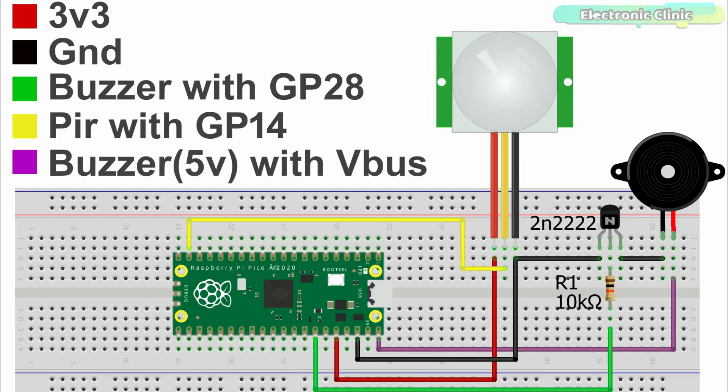The PIR sensor red and black wires are connected with the Raspberry Pi Pico board 3.3V and ground pins, while the signal wire of the PIR sensor is connected with the GP14 of the Pico board.